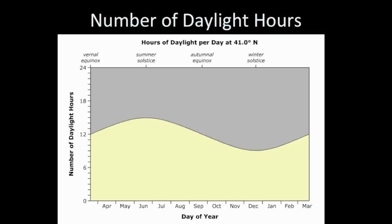On the equinox — autumnal or vernal, that would be the fall or spring equinox — you get 12 hours of daylight. This variation goes up and goes down for somebody living in the Northern Hemisphere. You'd get something very similar for somebody living at 41 degrees south in the Southern Hemisphere, except the max and min would be reversed on those dates of the year.